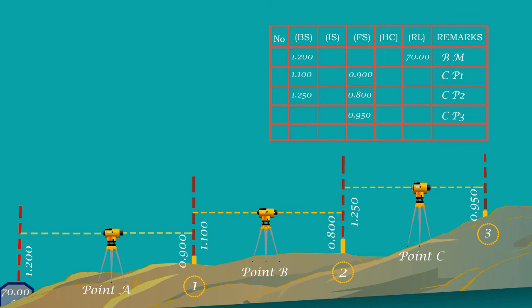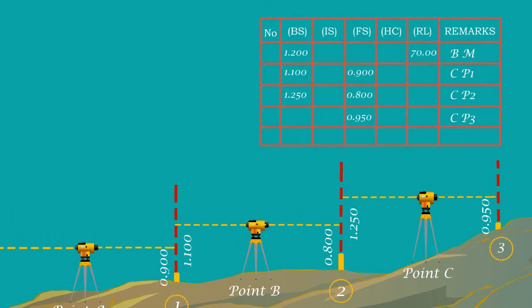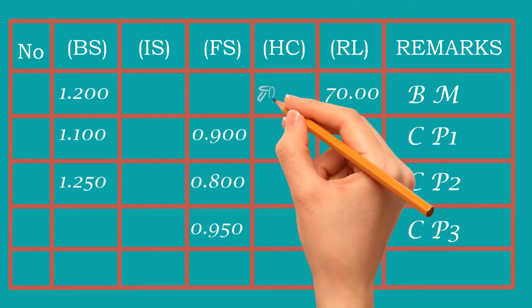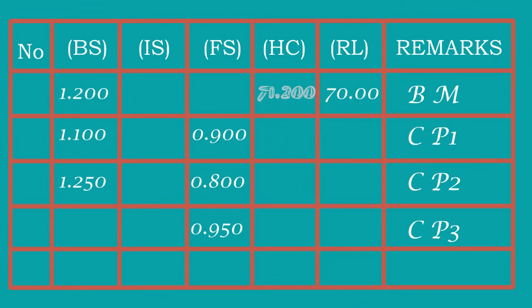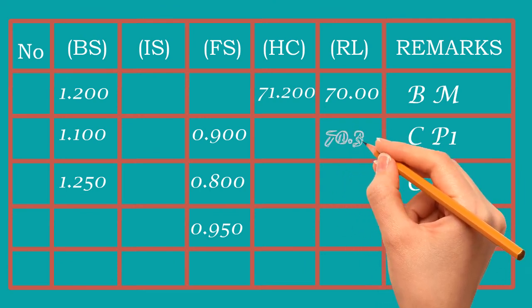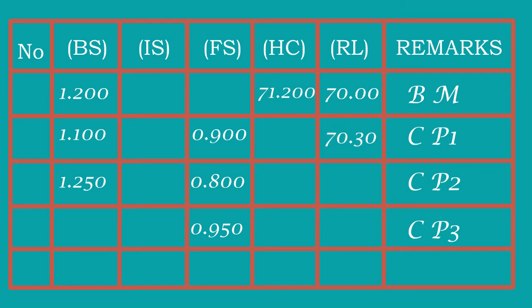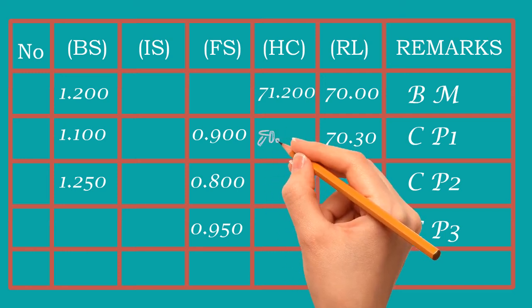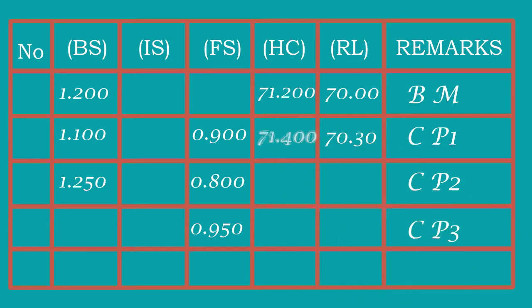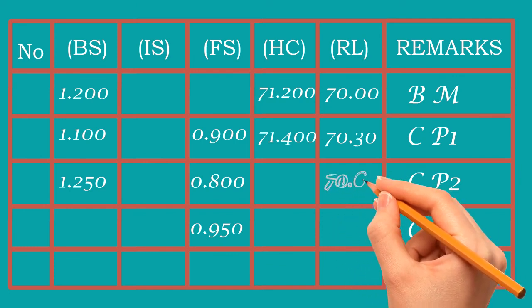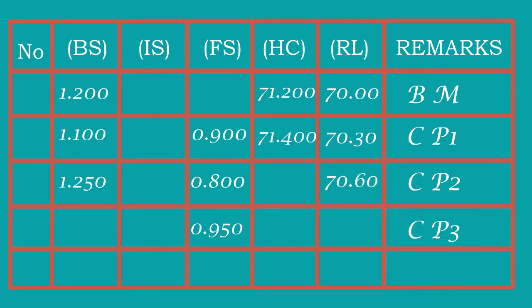Now let us look into the table and calculate the RL of each change point. The height of collimation at point R is 70 plus 1.20 equals 71.20 meters. From this HC, deduct the foresight 0.90 meter, which gives 70.30 meters, which is the RL value of change point 1. Now the HC of the instrument at station B is the RL of CP1, 70.3 meters, and add the BS 1.1 meters equals 71.4 meters. And deduct the FS 0.80, gives the value 70.6 meters, which is the RL of CP2.